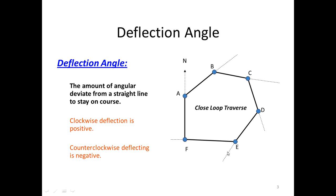Let's look at what a deflection angle is now. It is the amount of angular deviation from a straight line to stay on course. Clockwise deflection is considered to be positive. Counterclockwise deflection is considered to be negative. As you can see, we have a closed loop traverse here, which means the starting point and the ending point of the traverse is the same point. As we travel from A to B, to stay on course, we have to deflect a certain amount — that is the deflection angle.